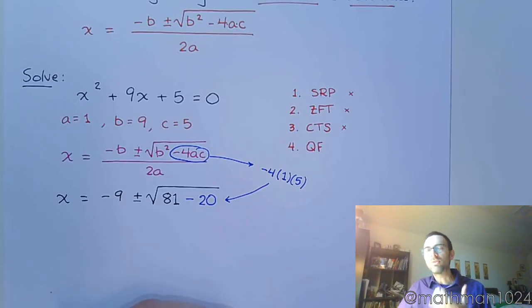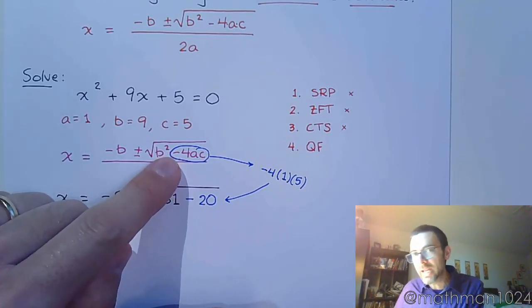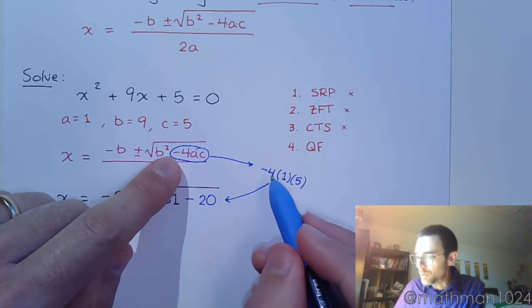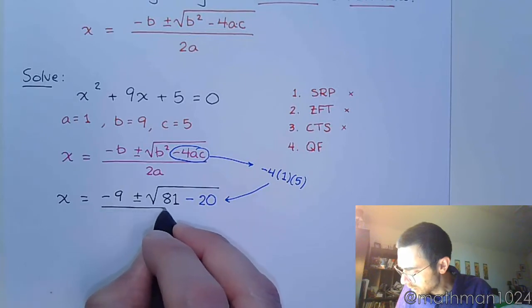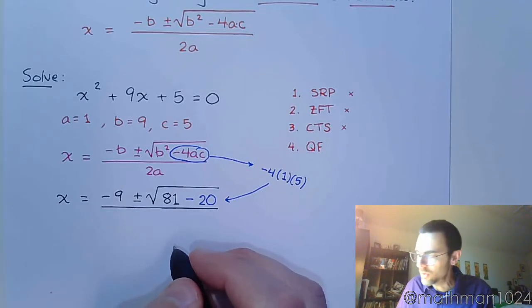So what I'm doing, I'm not just looking at the 4ac. I'm including that negative that's there in front. I'm doing the product on the side, and I get to put it back into my formula like that.